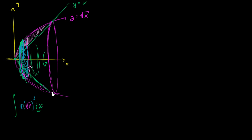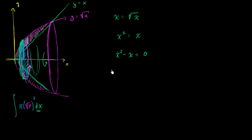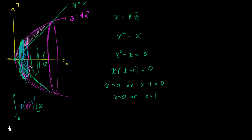We could just set these two things equal to each other: when does x equal the square root of x? We could say x squared equals x, or x squared minus x equals 0. Factoring out x gives x times (x minus 1) equals 0, so either x equals 0 or x equals 1. This gives us our boundaries of integration: x goes from 0 to 1.